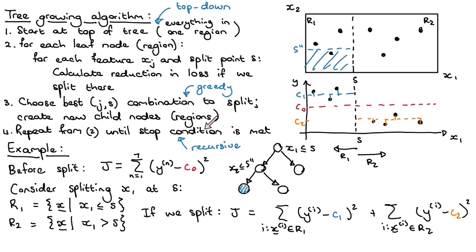We continue doing this until some stop condition is met. That can take different forms. For example, you can continue to split until your leaf node contains very few training data points — maybe you require at least five training items per leaf. Or you could say you'll only split if the improvement in the loss is big enough, putting some threshold and saying you continue growing the tree until you're not getting a very large improvement in loss.